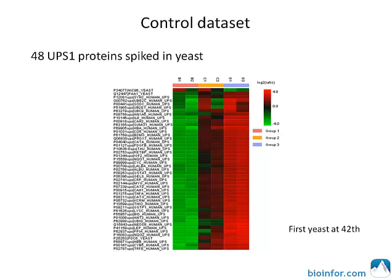We used PEAKS label-free quantification to analyze the dataset. Of the top 48 quantified proteins with fold change greater than 2, 45 proteins are UPS1 proteins. The first yeast protein appears ranked at 42. This result shows high sensitivity and high accuracy of PEAKS label-free quantification.